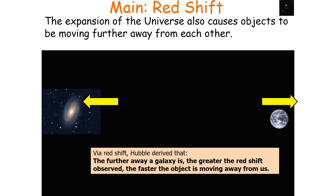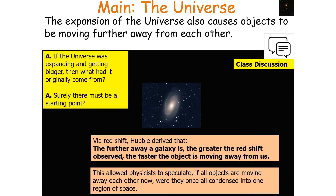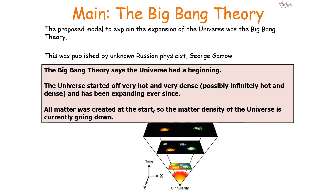Via redshift, Hubble derived that the further away a galaxy is, the greater the redshift observed, and the faster the object is moving away from us. This allowed physicists to speculate: if all objects are moving away from each other now, were they once all condensed to one region of space? The proposed model to explain the expansion of the universe was the Big Bang Theory.